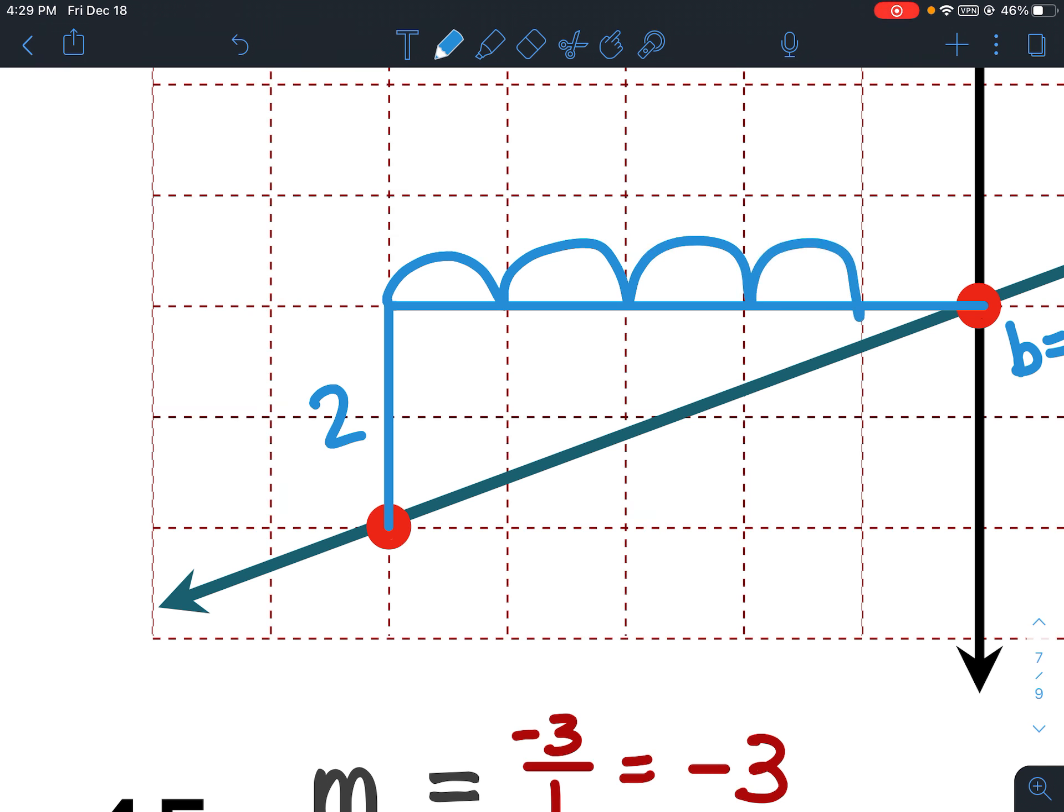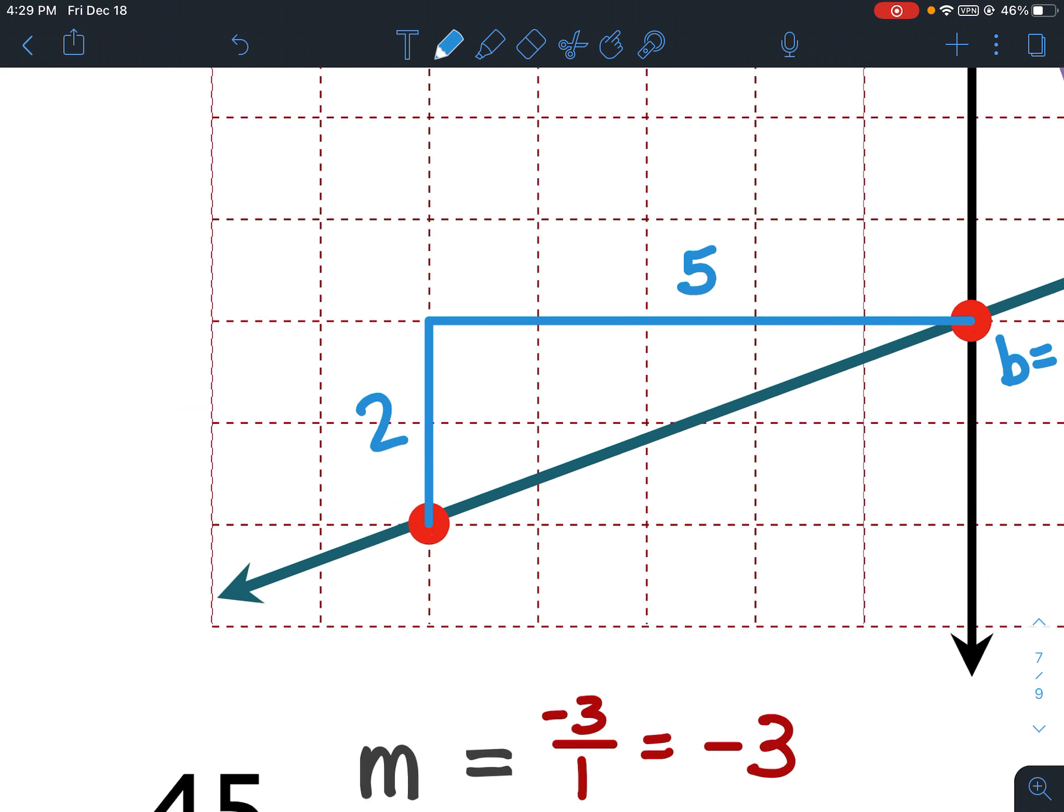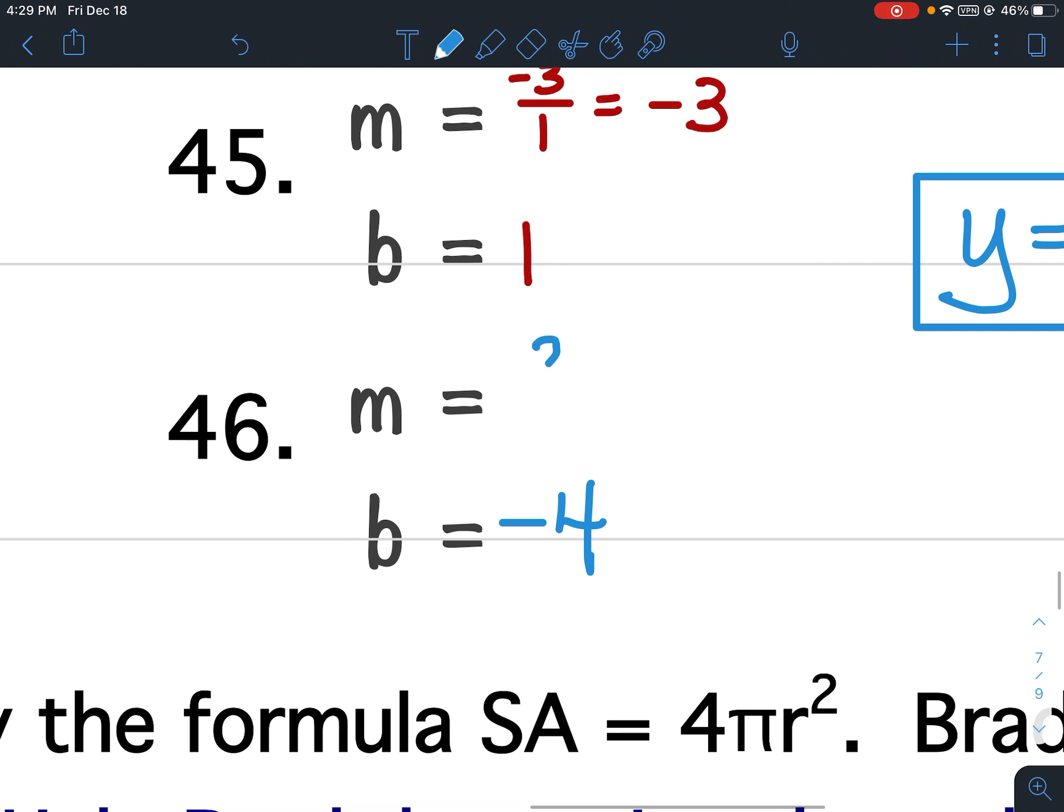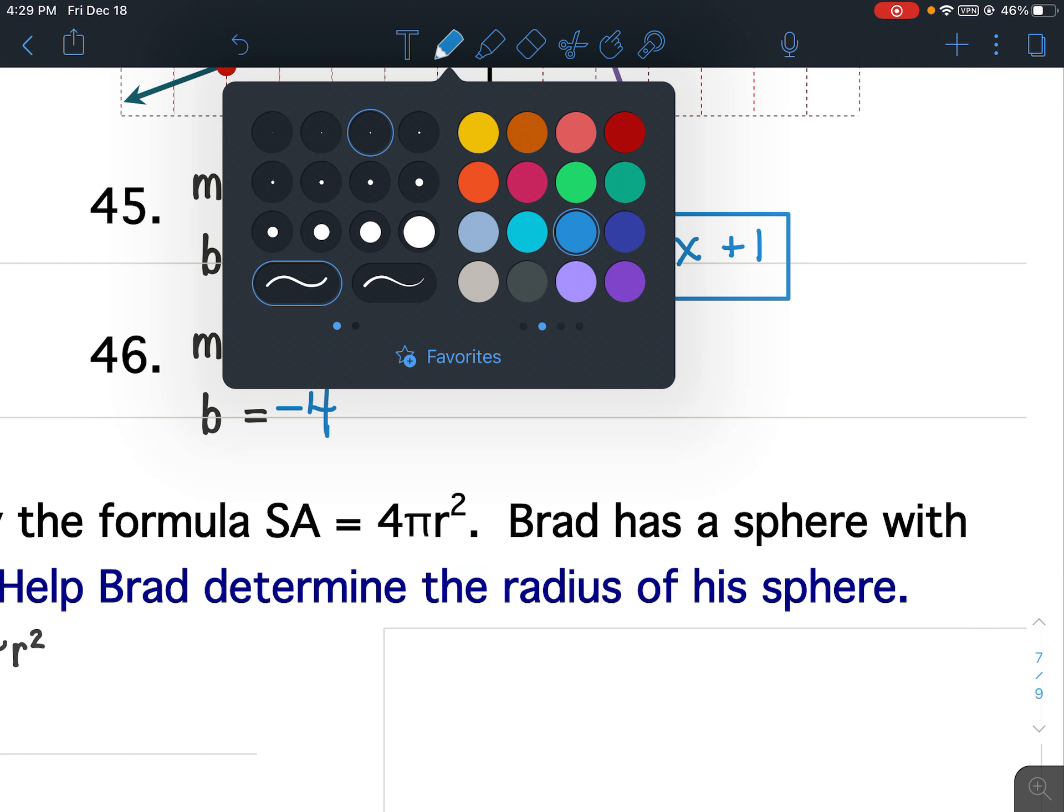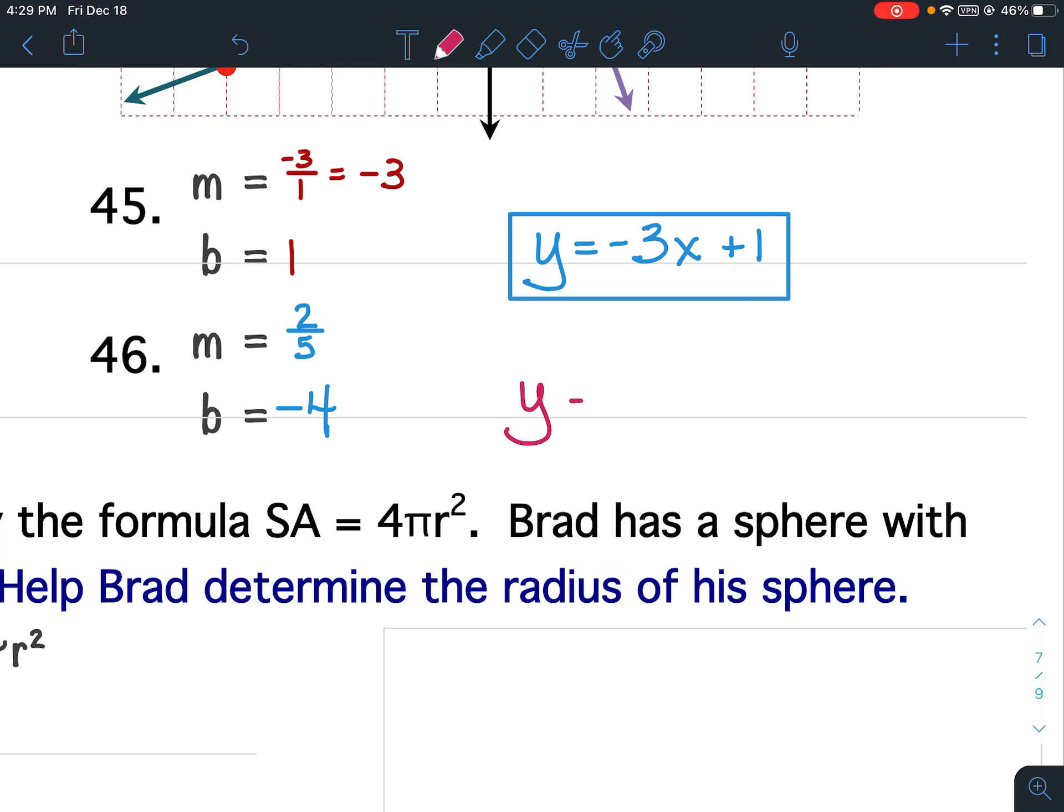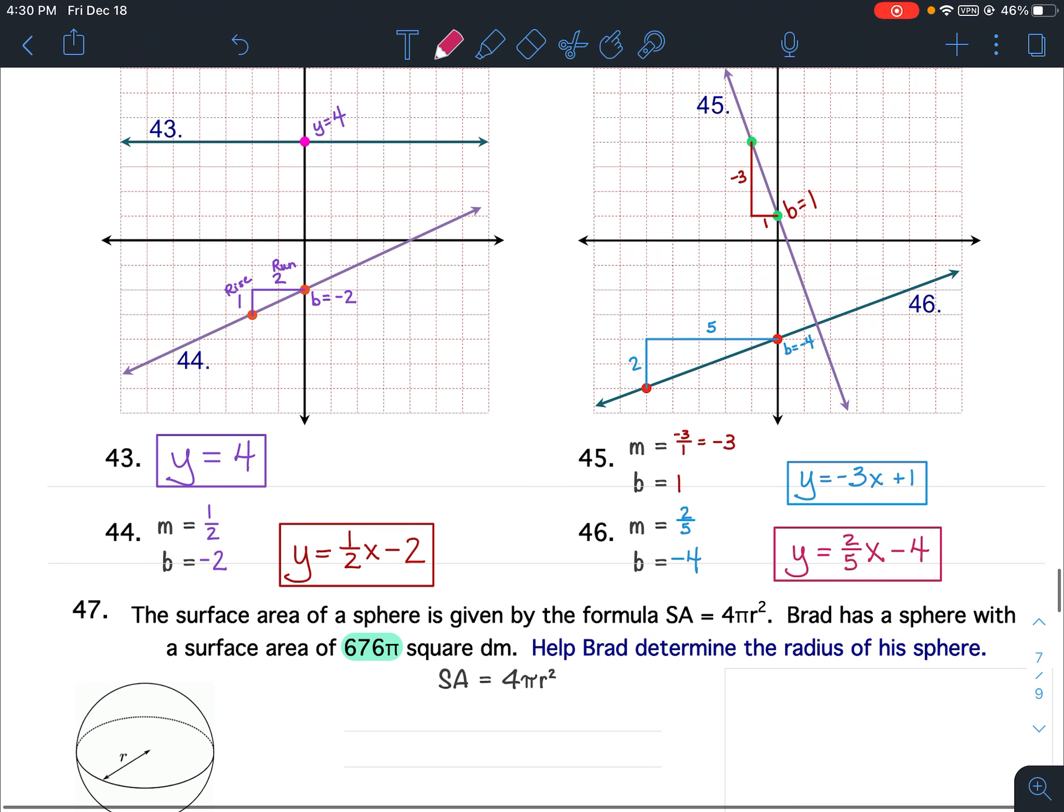Rise of 2, run of 5. Really does not want to make a line for me. Okay. Now my equation. Y equals 2 fifths x minus 4. All right. That is it for 43 through 46.